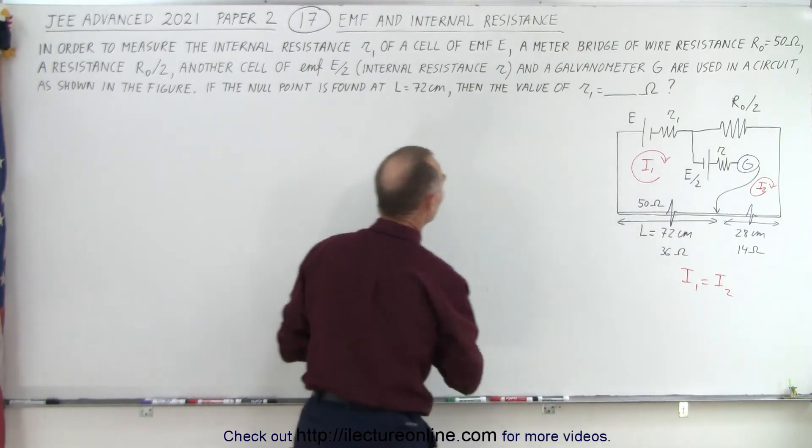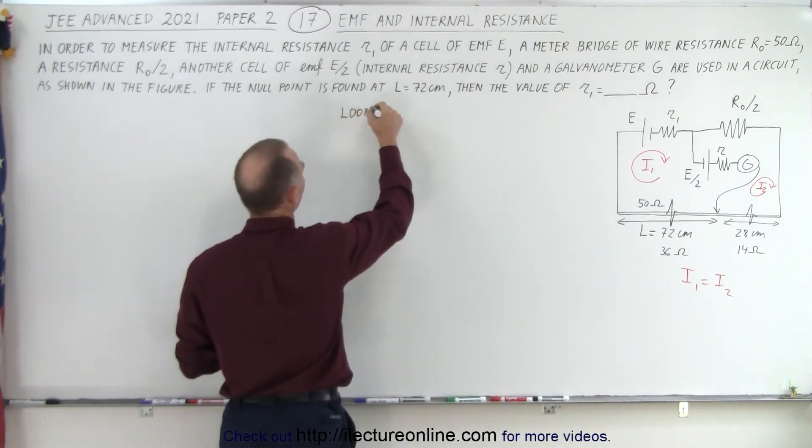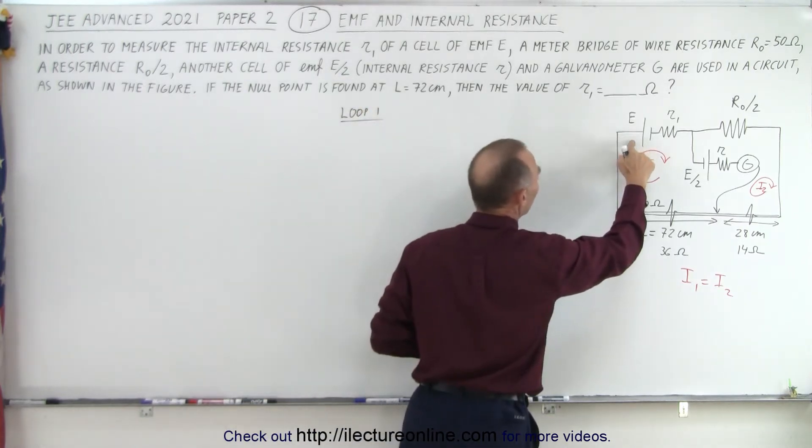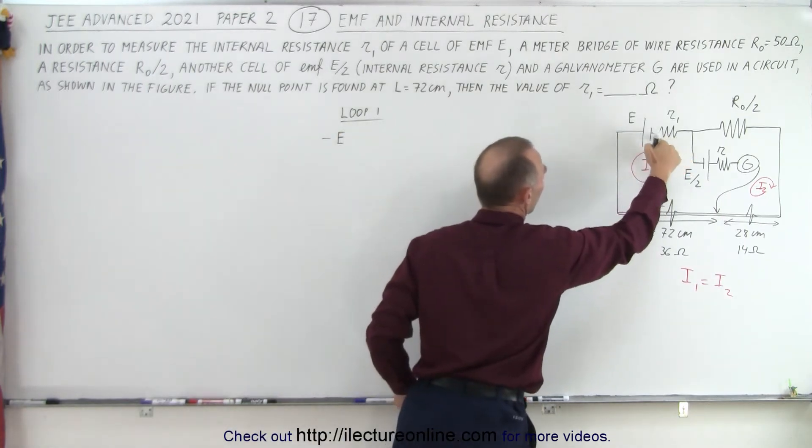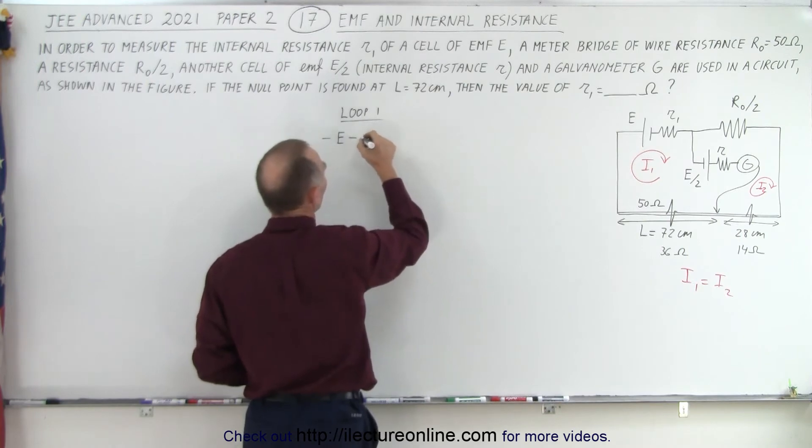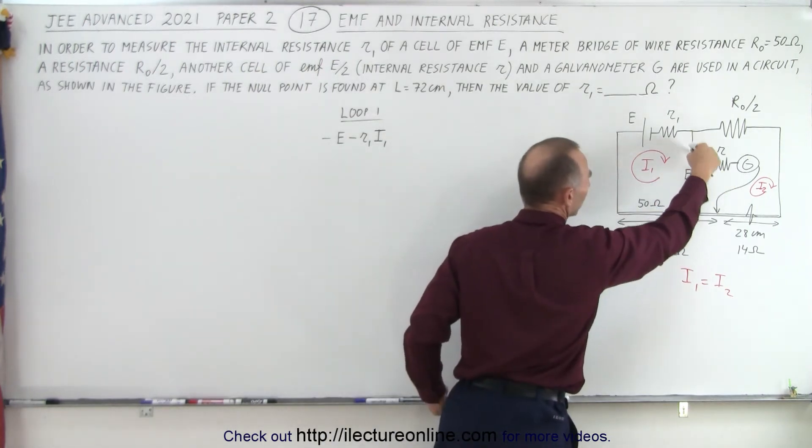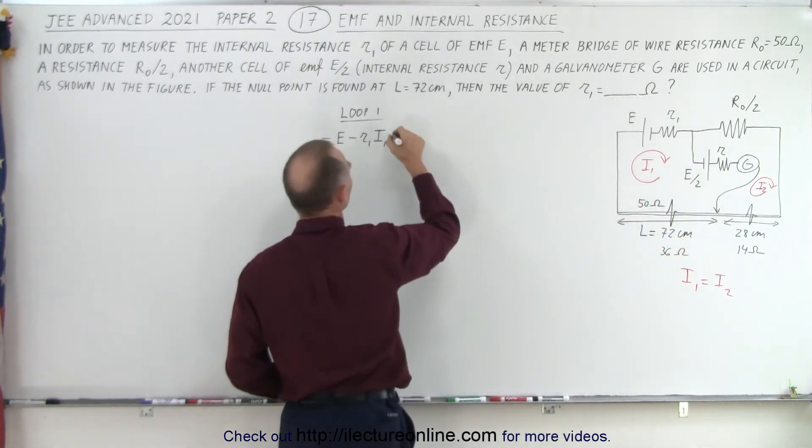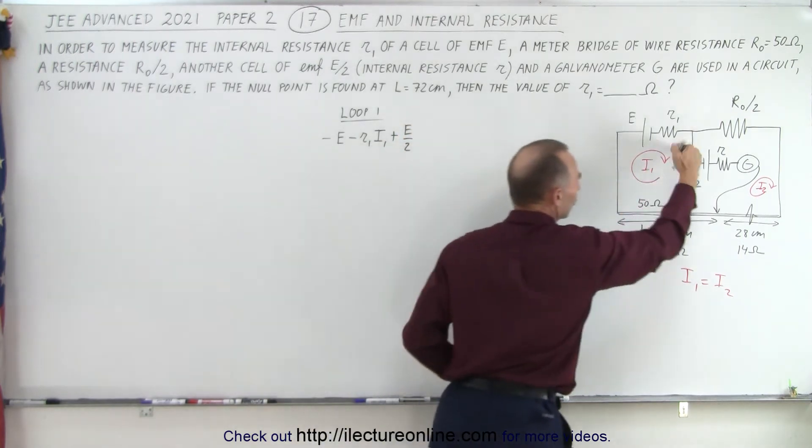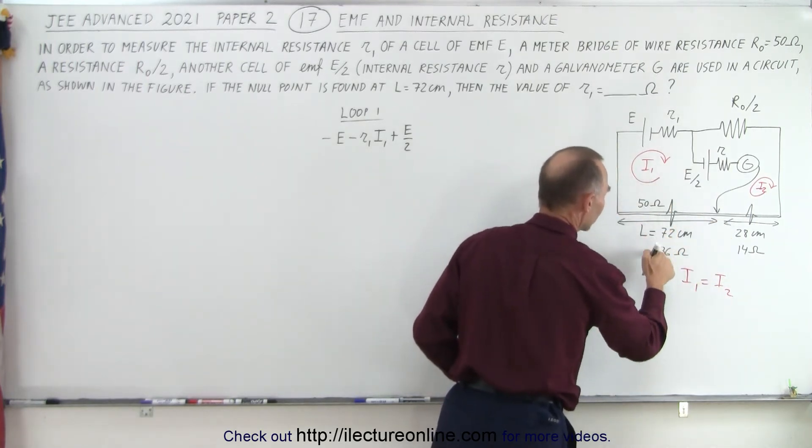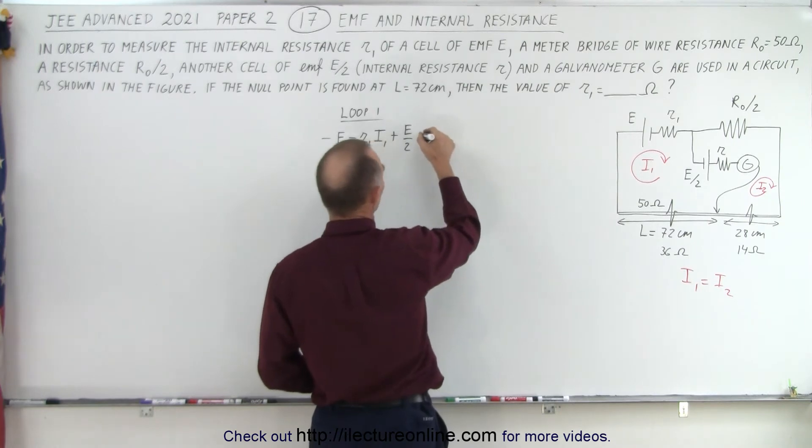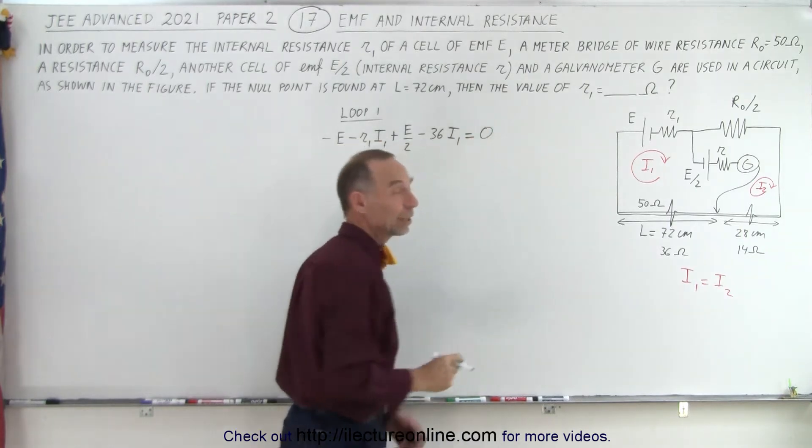Loop one. Starting with the EMF, we go from high to low, that would be minus E. Then we have a voltage drop across the resistor, so that's minus R1I1. And then we go from here to here across this one, that's plus E/2. But there's no current coming through here, there's no voltage drop across the resistance. Then we go from here to here. Again we have I1 times the resistance of 36 ohms, so that's a voltage drop of minus 36 times I1, and we come around and that equals zero.